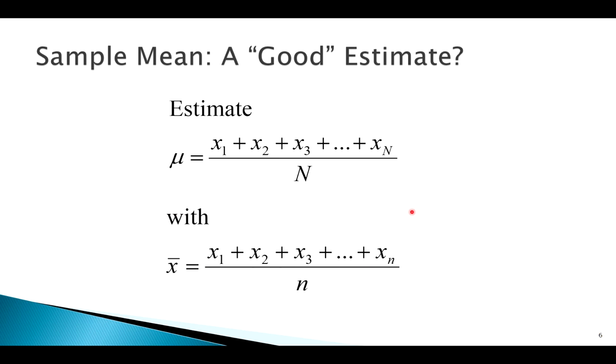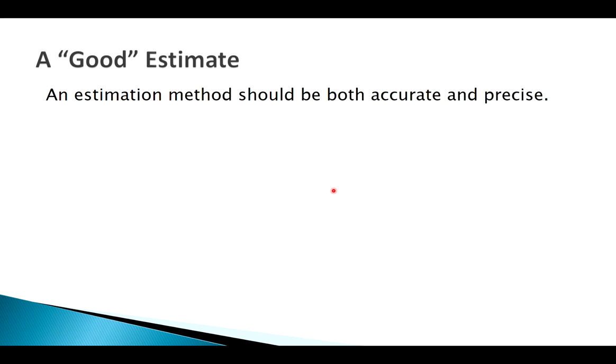So is this a good estimate of this? I mean, they look pretty similar. And our formulas look similar, you would think that just finding the mean of a sample should be pretty close to the mean of the population. So yeah, it's probably a good estimate. What do we really mean by a good estimate?